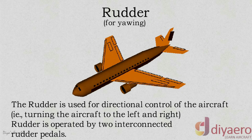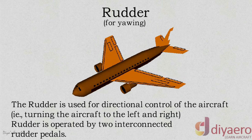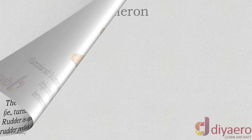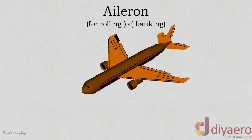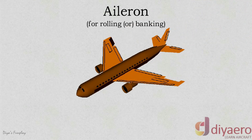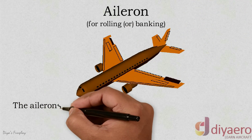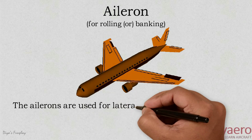Aileron. The ailerons are usually positioned on the outboard trailing edge of the main wings. The ailerons move in opposite directions — that is, when one aileron goes up, the other aileron goes down.